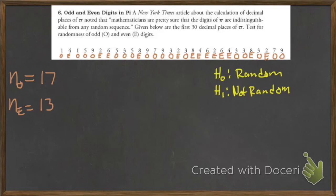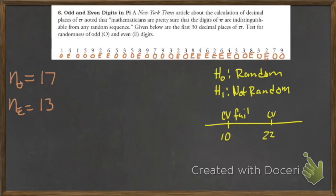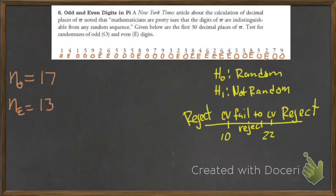Because my n's are smaller than 20, I can use the chart in the back of the book. We got our critical values to be under 10 or over 22. That is going to determine whether or not we're going to reject or fail to reject this idea of pi being random. So we assume that pi is random, and then we go count the switches.